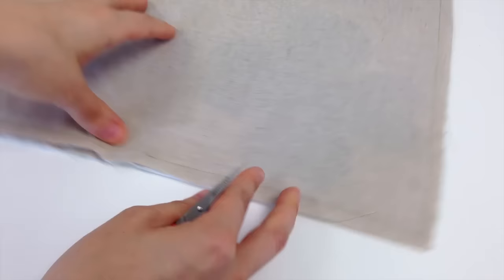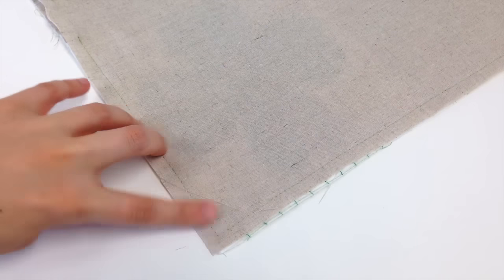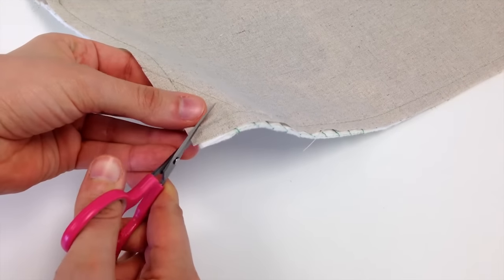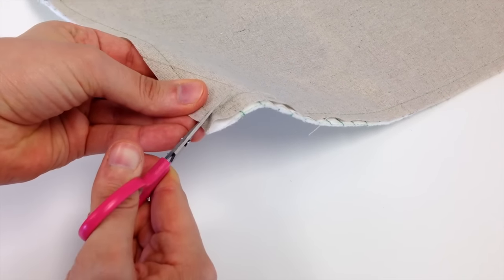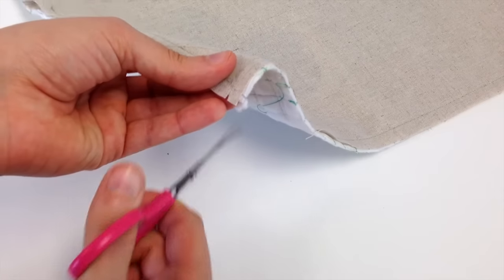Clip each corner at the seam allowance to ensure you will get nice pointy corners when you flip your piece through. Flip piece through the unsewn portion. Press piece and hand stitch unsewn portion closed.